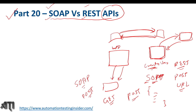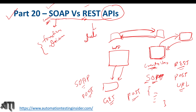SOAP stands for Simple Object Access Protocol and uses a service interface. REST stands for Representational State Transfer — it is an architectural design. SOAP relies on strict protocols and uses different functions internally to access APIs — it is function-driven. REST, on the other hand, is data-driven; it most relies on the data.